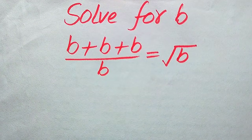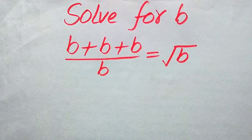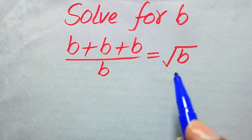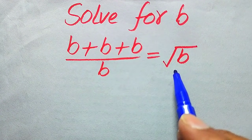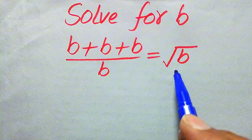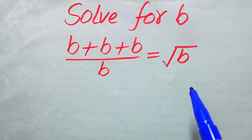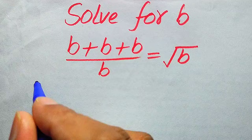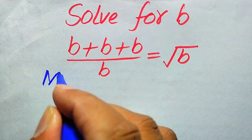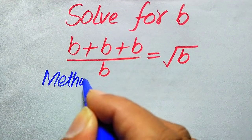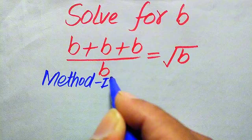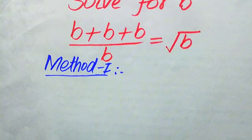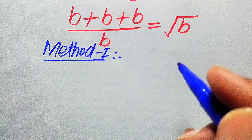Hello everyone. How to solve this problem for the values of B if we have B plus B plus B divided by B equals the square root of B. We need to find all the roots of this equation, so we solve this problem using two methods. If you have any other method in mind, please don't hesitate to write it into the comment section.